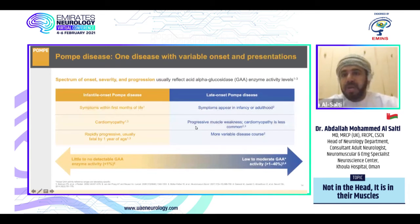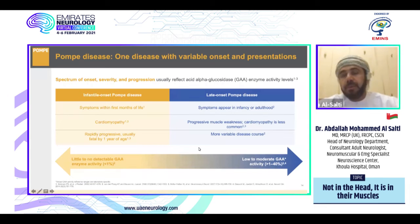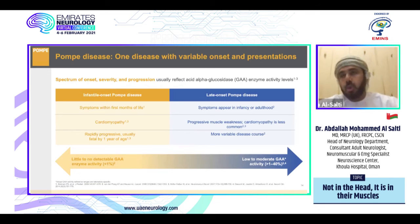Pompe disease is one disease but with variable onset and progression. The spectrum differs in onset, severity, and progression, which is reflected by the level of acid alpha-glucosidase enzyme activity. In infantile onset, the disease presents below 12 months of life with cardiomyopathy. In the late onset group, the disease course is more variable with a variable phenotype, due to low or moderate GAA activity usually above 1 to 40 percent.